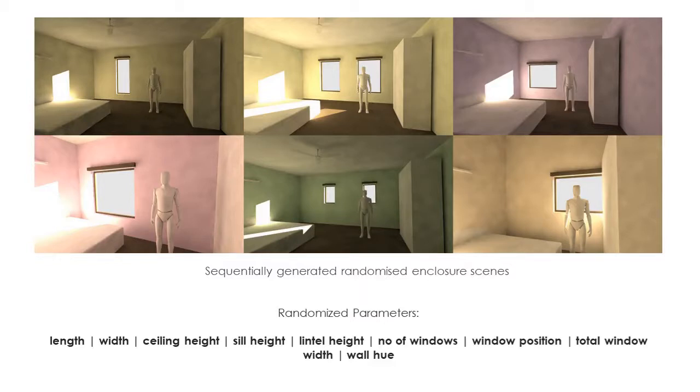A bed, wardrobe, ceiling fan and tube light were the only furniture or fixture items placed within each of these spaces, always in fixed relative location. All such items were rendered in white in order to retain primary focus on the spatial parameters of the enclosure.